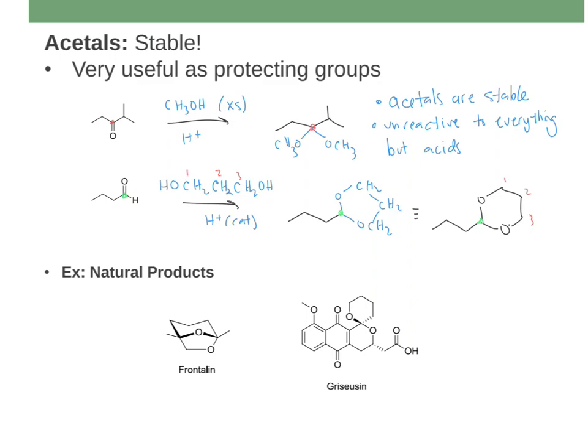Where do you see these? You do actually see acetals in natural products — they're not super common, but they are around. Here are two examples where we've got an acetal carbon — that's the carbon that has an OR group on it and another OR group on it. Sometimes you do see them show up in natural products, so it's worthwhile knowing how to make them. Their real use to a synthetic chemist is that they're great protecting groups — for hiding a ketone or aldehyde that you don't want to react, and you can bring it back later by just adding acid and water.